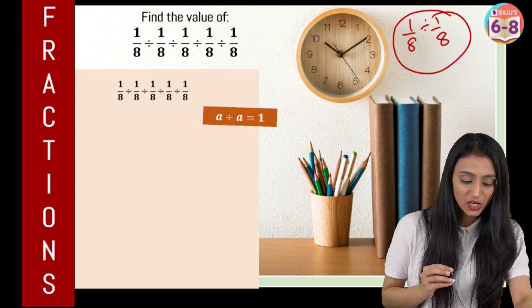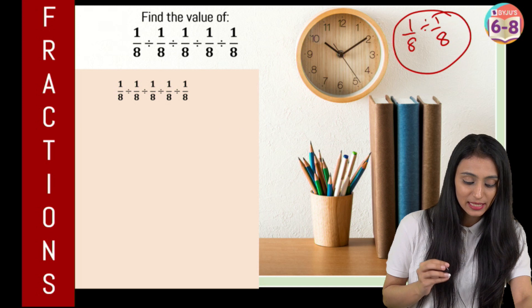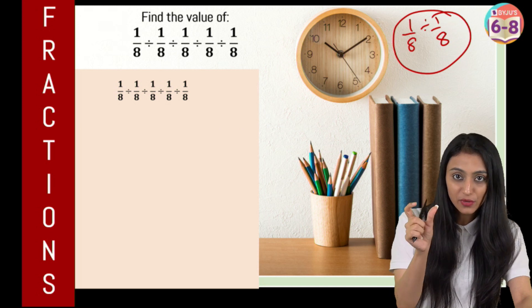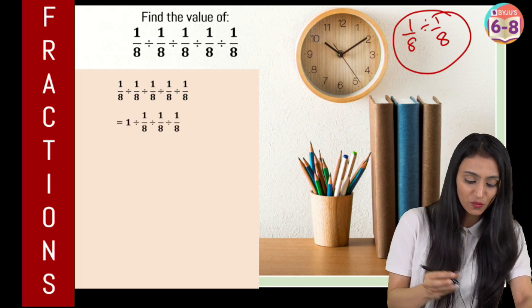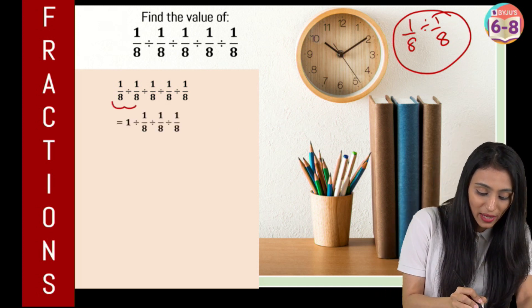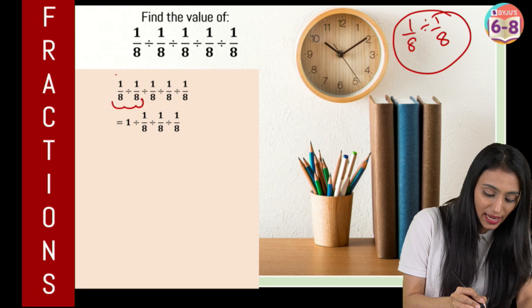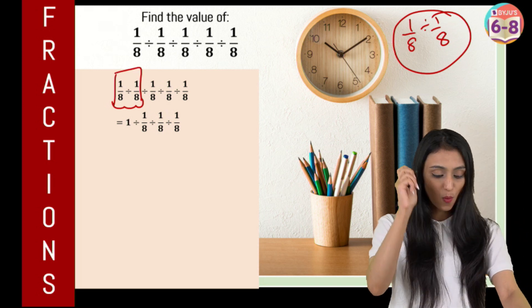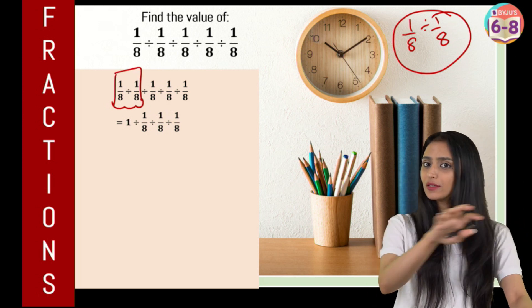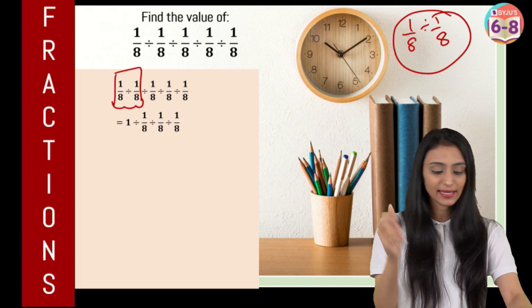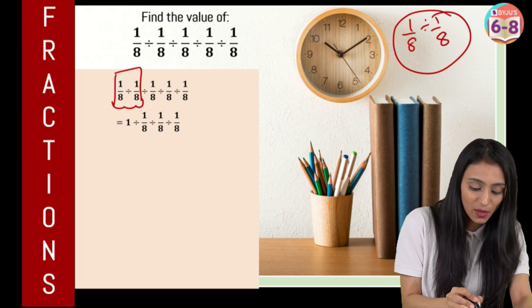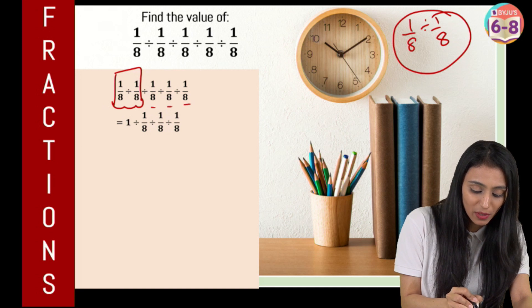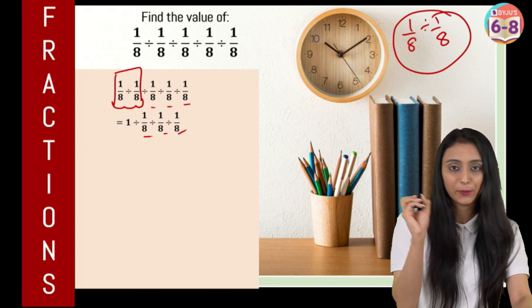So what we can say here is, let's start with the first two numbers: 1/8 and 1/8. As we said, that's going to be equals to 1. The rest of the things I'm going to write as it is: divide by 1/8, 1/8, 1/8.